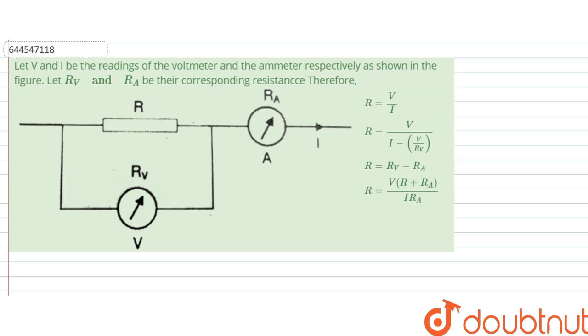Hello, we are given another question and the question says, let V and I be the readings of voltmeter and ammeter. So this is a voltmeter and this is an ammeter. R_V and R_A be their corresponding resistances. So therefore which relation is correct? R is equal to what?